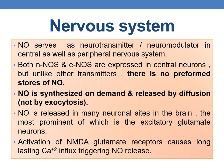NO serves as a neurotransmitter or neuromodulator in both the central and peripheral nervous system. Both nNOS and eNOS are expressed in central neurons. Unlike other transmitters, there are no preformed stores of nitric oxide — it is synthesized on demand and released by diffusion, not by exocytosis. Nitric oxide is released at many neuronal sites in the brain, most prominently from excitatory glutamate neurons.